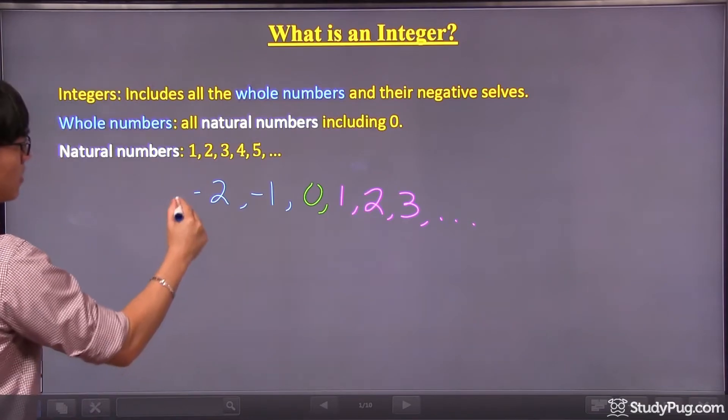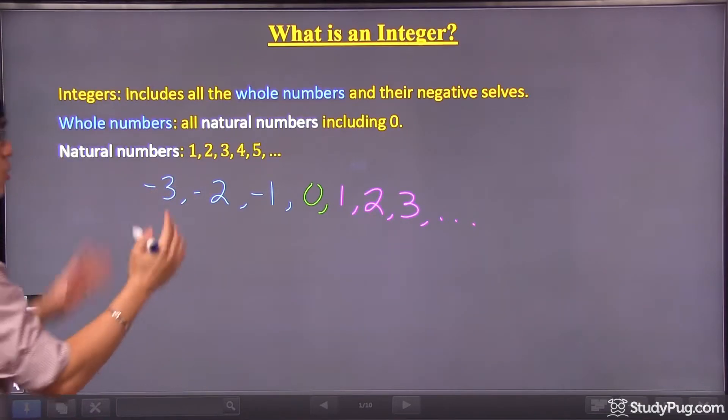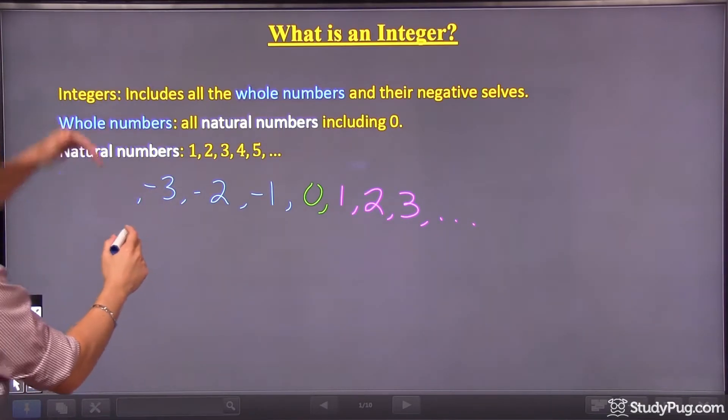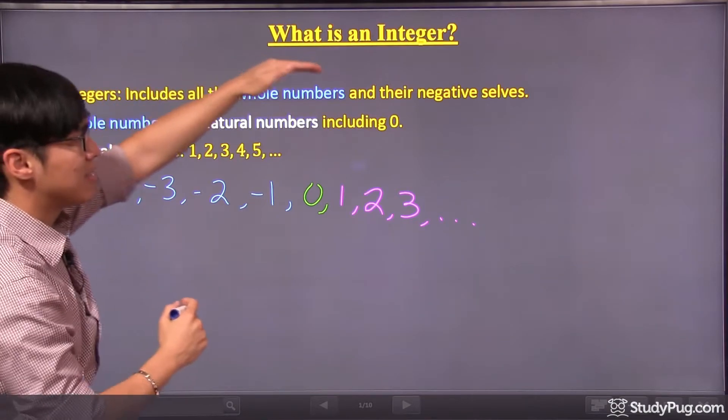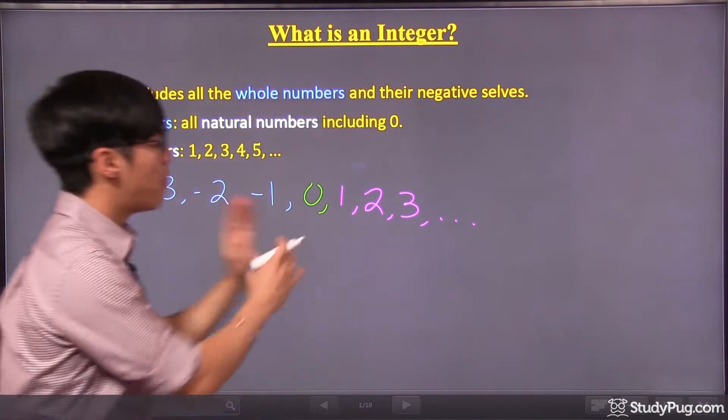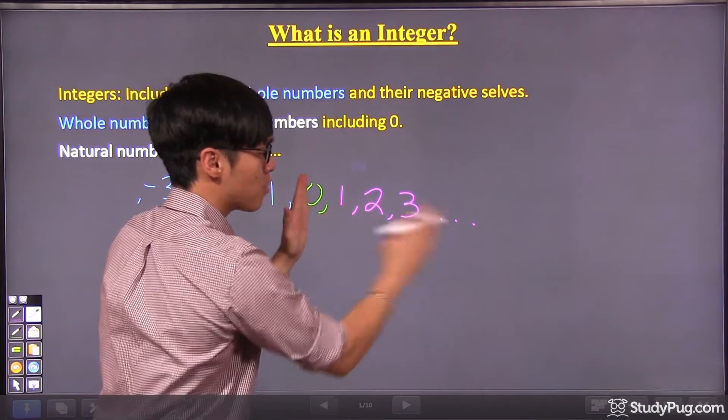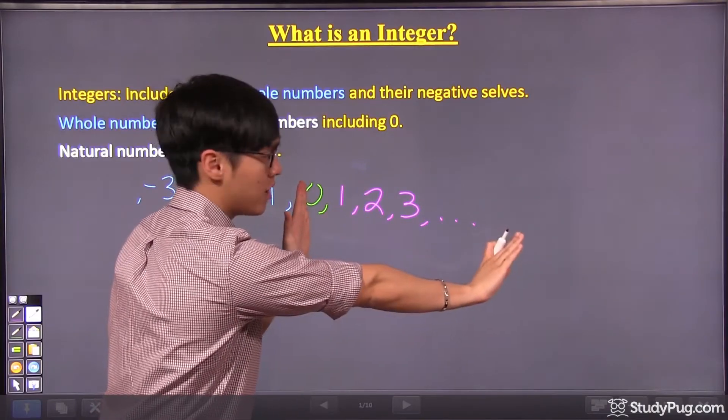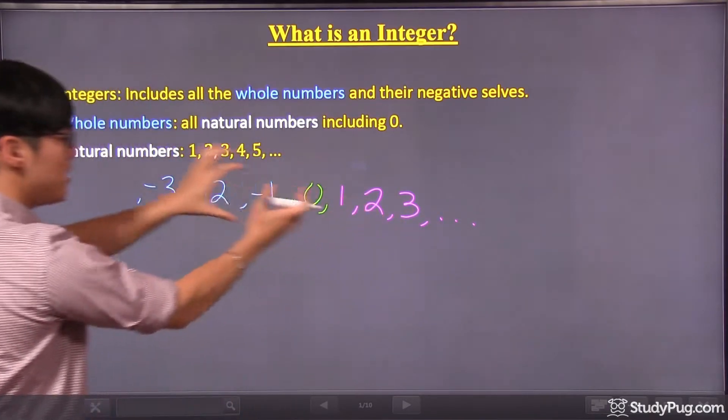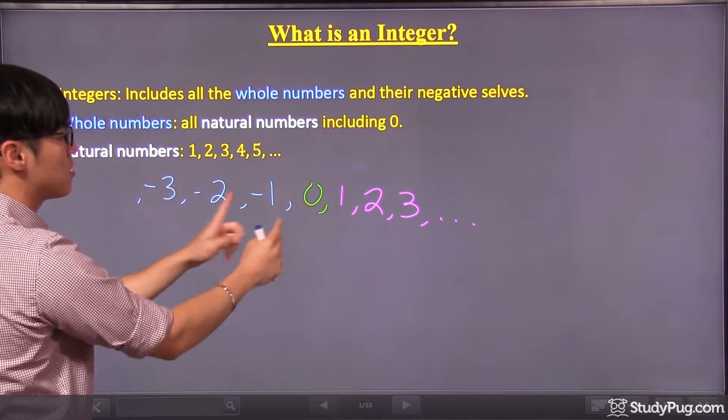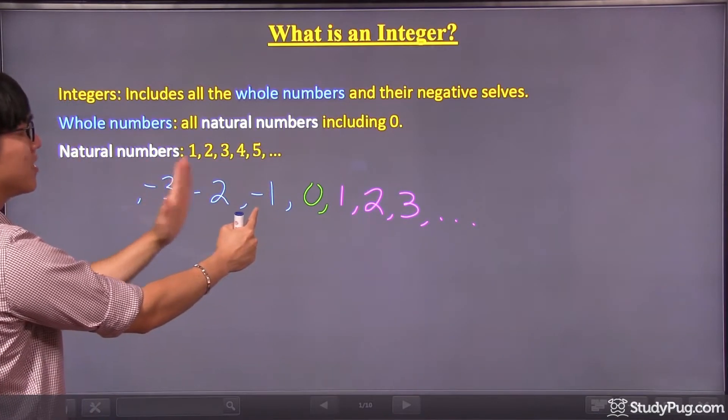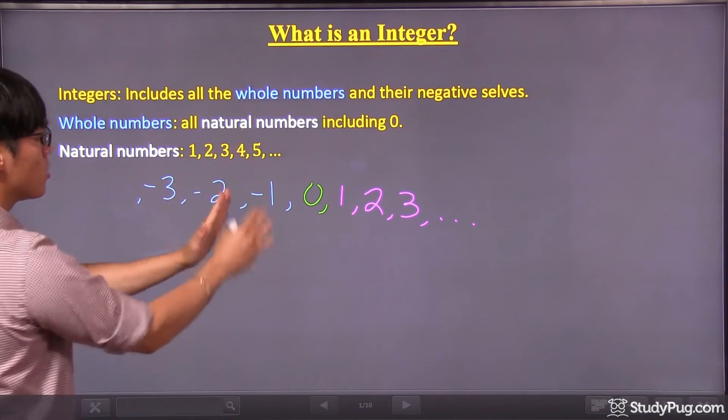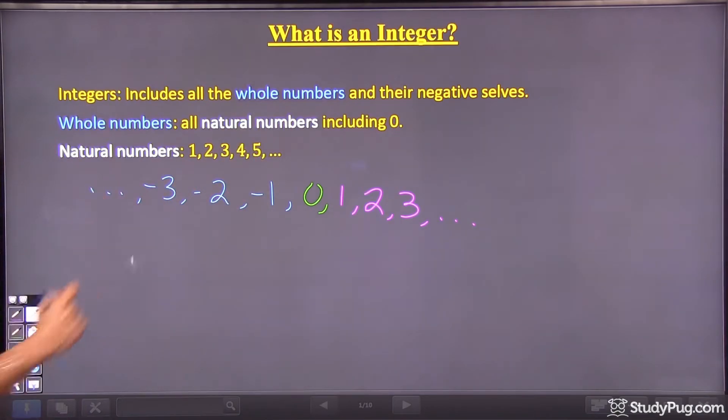And as for three, it will be negative three. So this is what we mean by the whole numbers and their negative selves. So apart from all the positive numbers, which go on and on forever, on the negative part, to the left of zero, we will have negative numbers, the negative of the whole numbers going on forever.